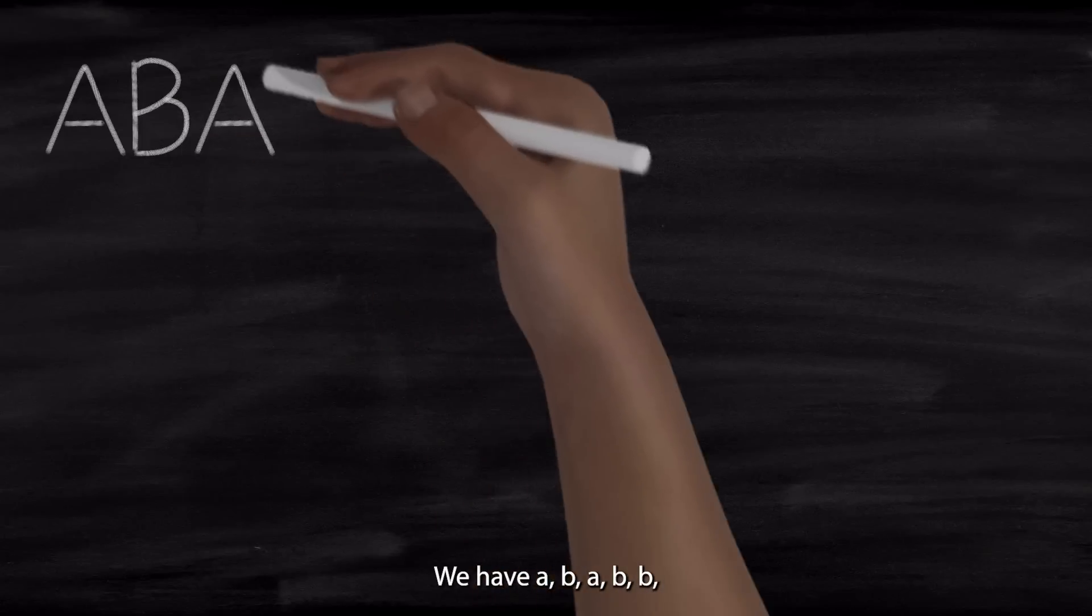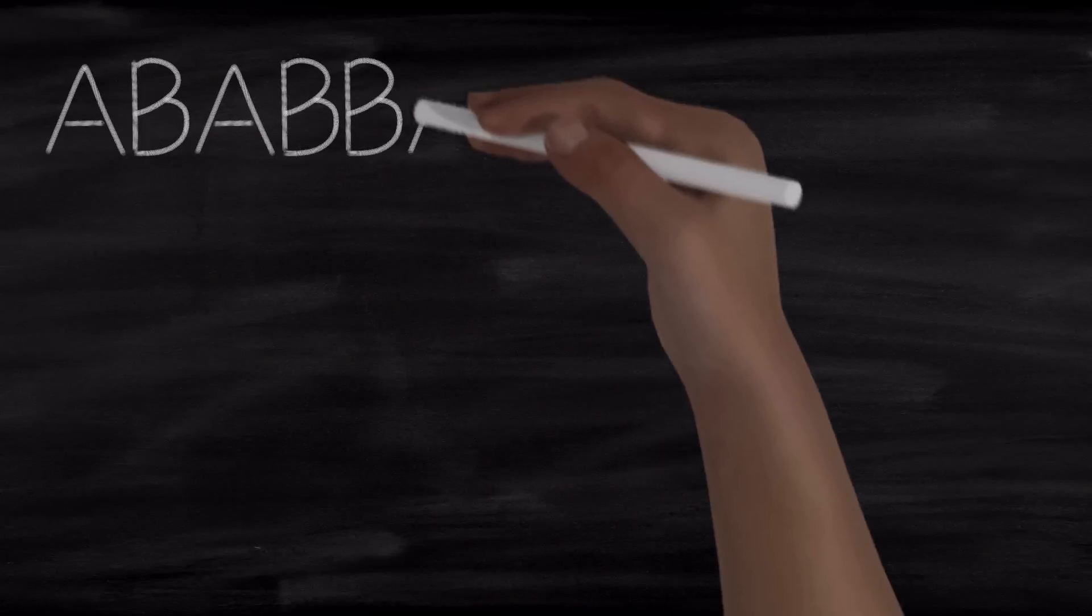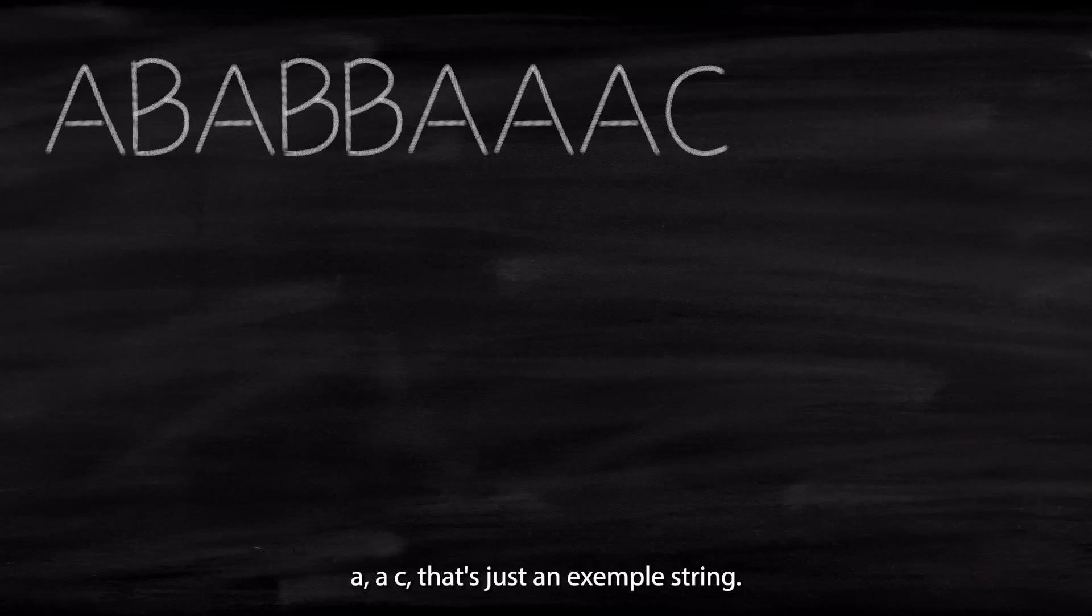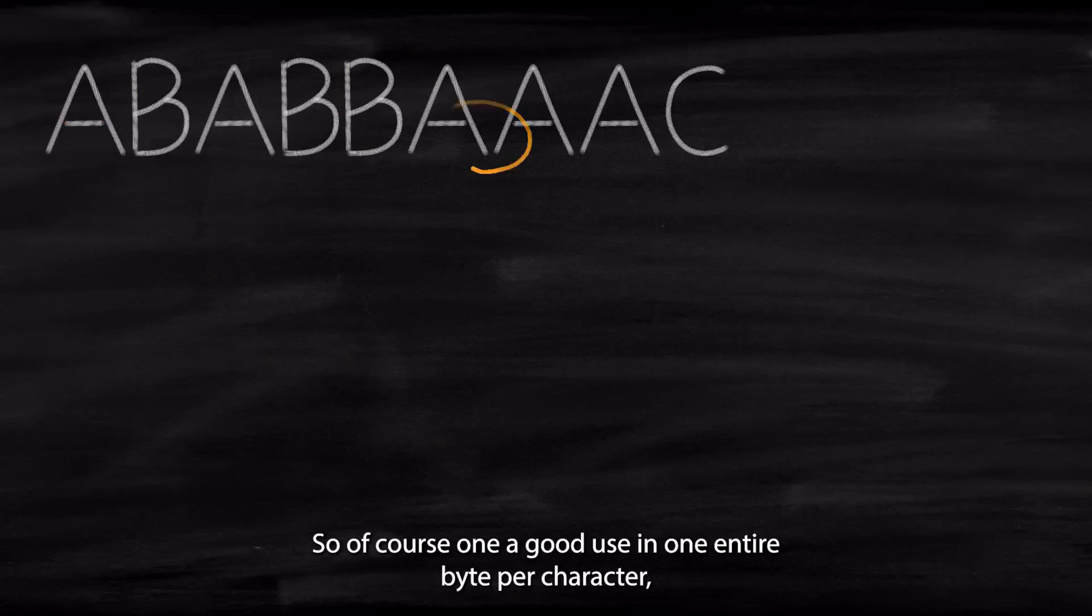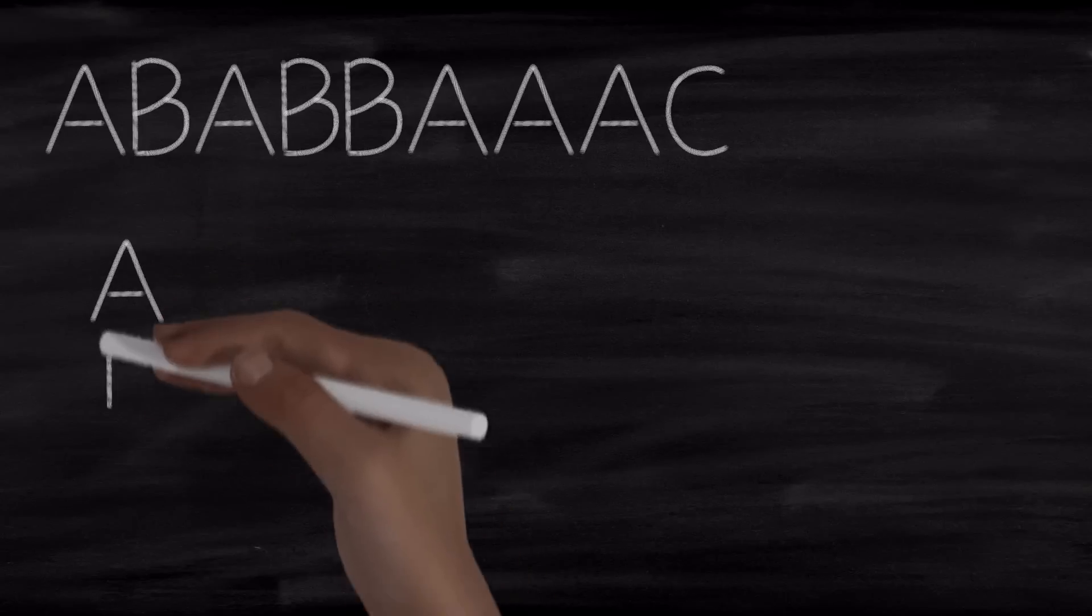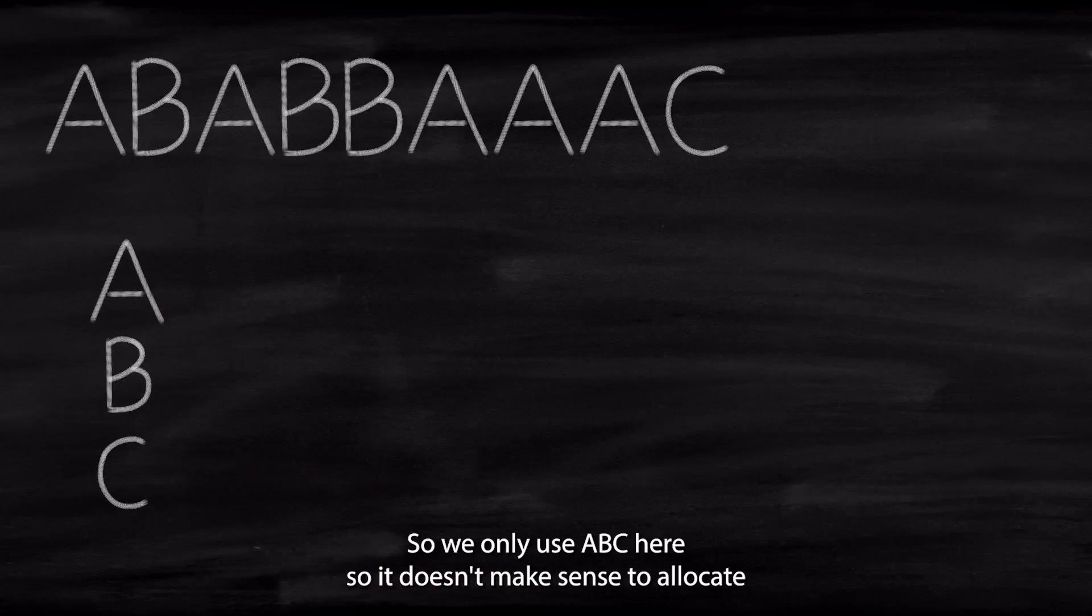So let's check this example. So we have A, B, A, B, B, A, A, A, C. That's just an example string and we need to compress it. Of course, we know exactly that in ASCII we have one byte per character. So we're not going to use one entire byte per character. We are going to have a dictionary of all the things that we are using. So we only use A, B, C here. So it doesn't make sense to allocate one entire byte per character.